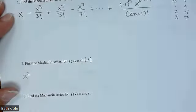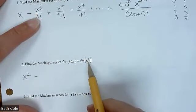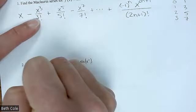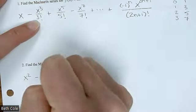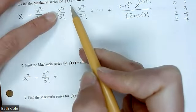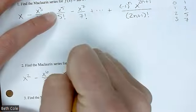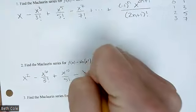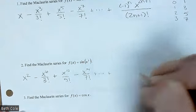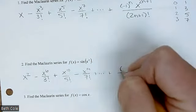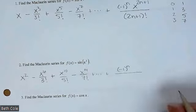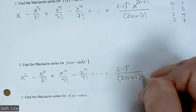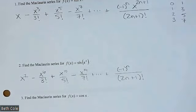Your first term would just be x squared. For the next: if you take x and replace it with x squared, you'd have x squared to the third, which gives you x to the sixth — over 3 factorial, that doesn't change. Then x squared to the fifth is x to the tenth, over 5 factorial. And then x to the 14th over 7 factorial, plus dot dot dot. The alternating and the denominators didn't change, so it'll still be negative 1 to the n and 2n plus 1 factorial.